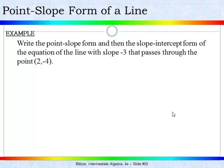In the first example we are asked to write the point-slope form and then the slope-intercept form of the equation of the line with slope negative 3, and that passes through the point (2, -4). Let's see if we can work this out.